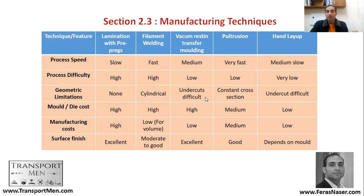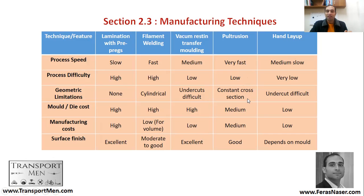Vacuum molding has medium process speed and low difficulty, with some geometric limitations — undercuts are difficult. Mold cost is high, manufacturing cost is low, and surface finish is excellent. Pultrusion is a very fast process with low difficulty, but you end up with a constant cross-section repeated again and again. Mold cost is medium, manufacturing cost is medium, and surface finish is good. Hand layup has a medium to slow process speed, low difficulty, and geometric limitations can be rather difficult. Mold cost and manufacturing cost are both low, and surface finish depends on the mold.